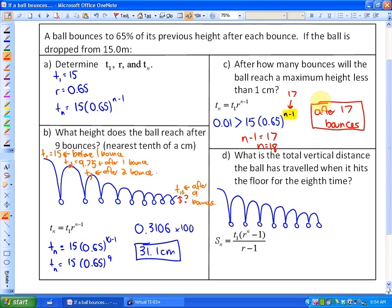The last problem here says, what is the total vertical distance the ball has traveled when it hits the floor for the eighth time? Total vertical distance would suggest that what we need to do is add up all of the vertical distances. In this particular case, total vertical distance, one thing we have to be aware of is that what comes up must also come down.